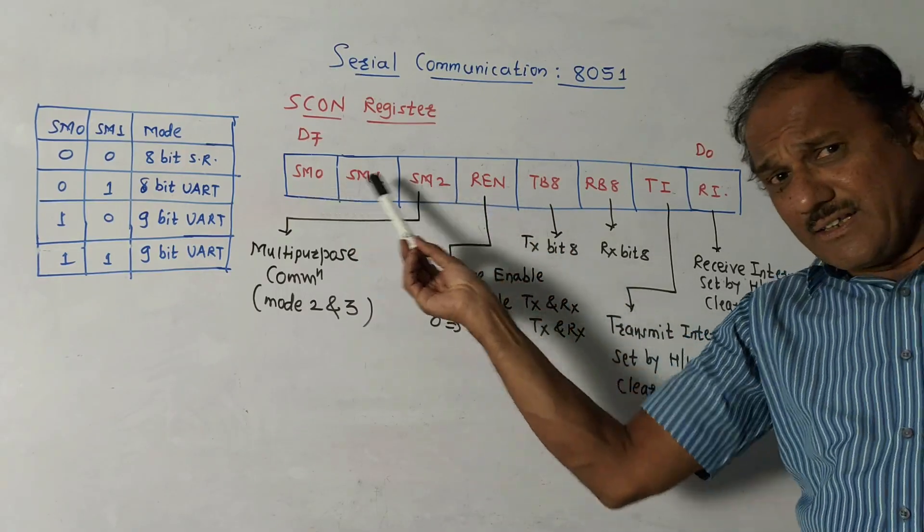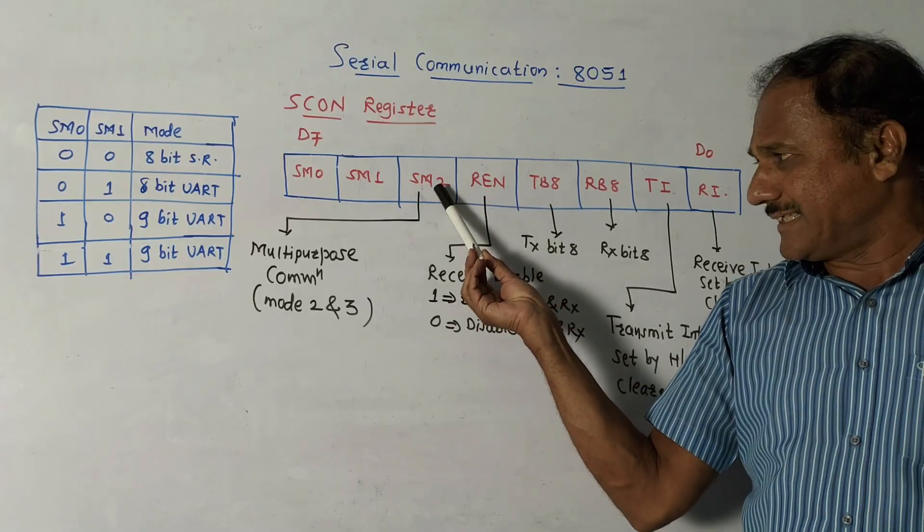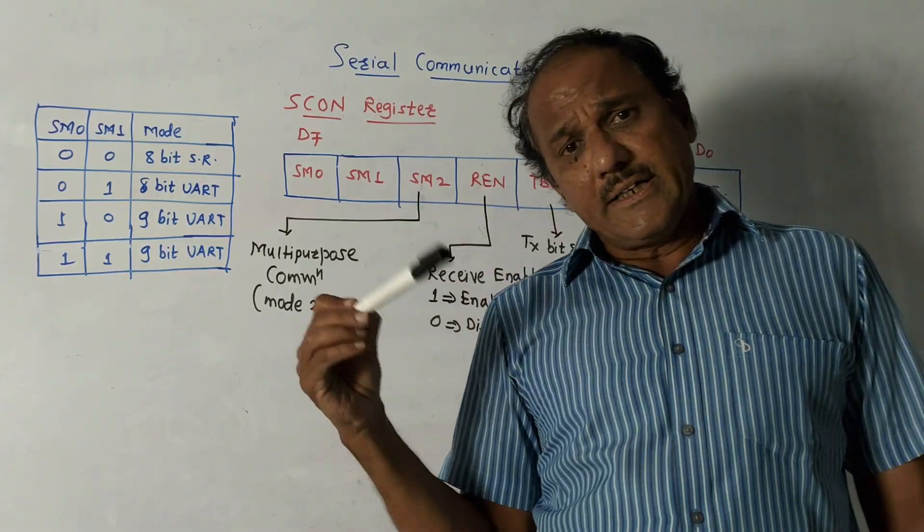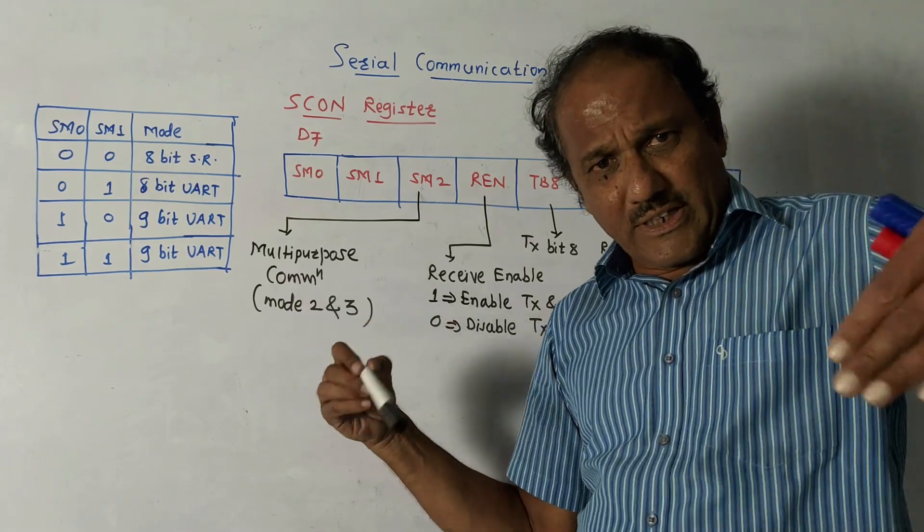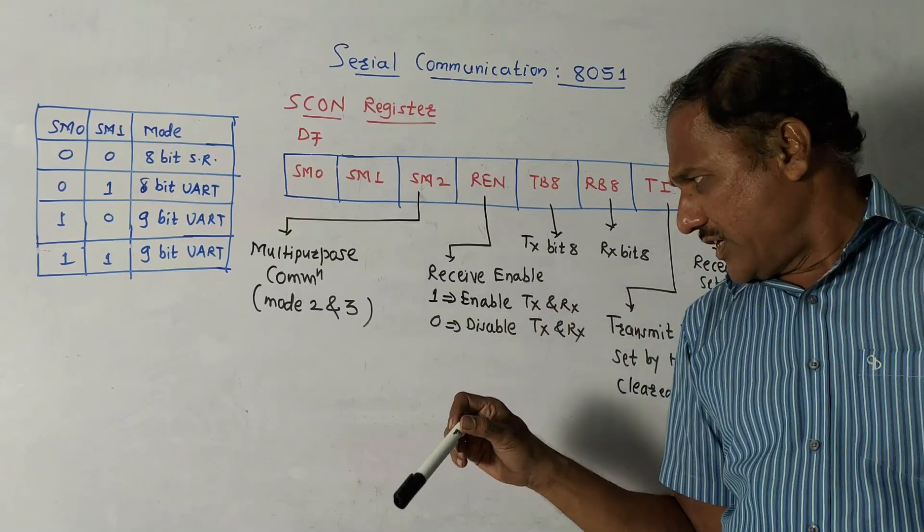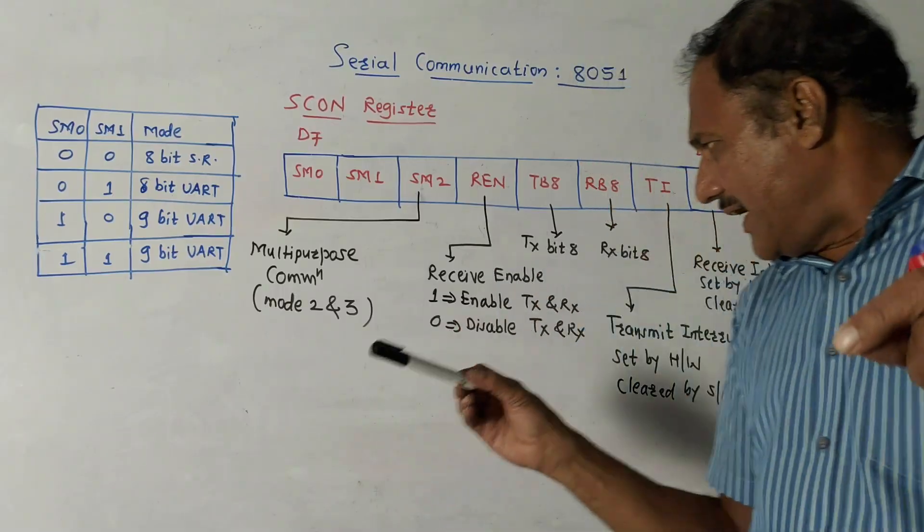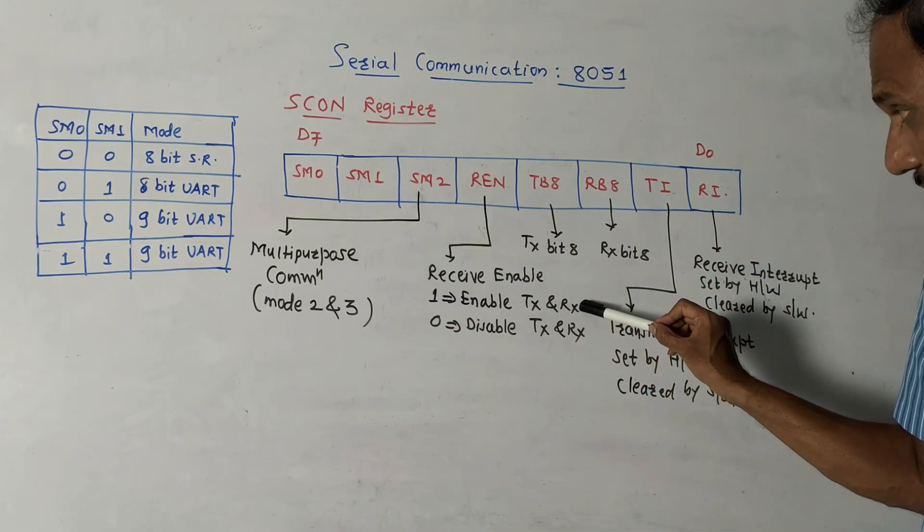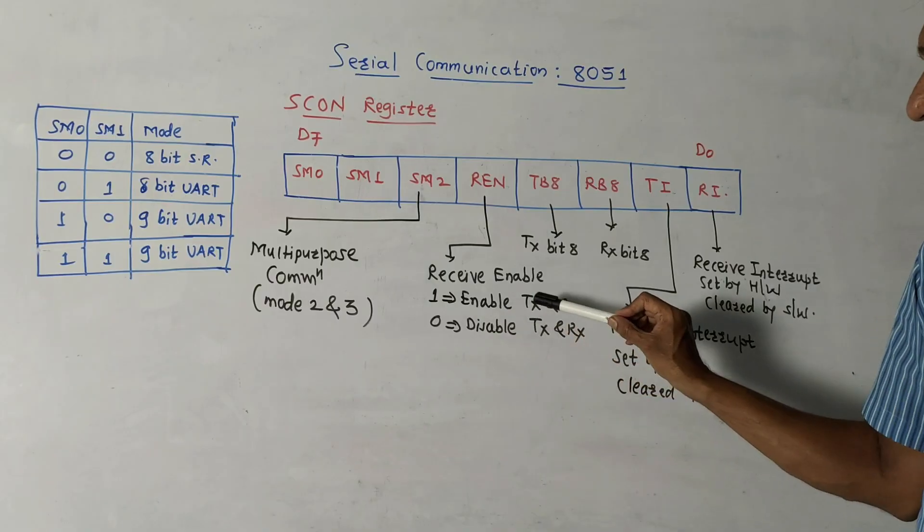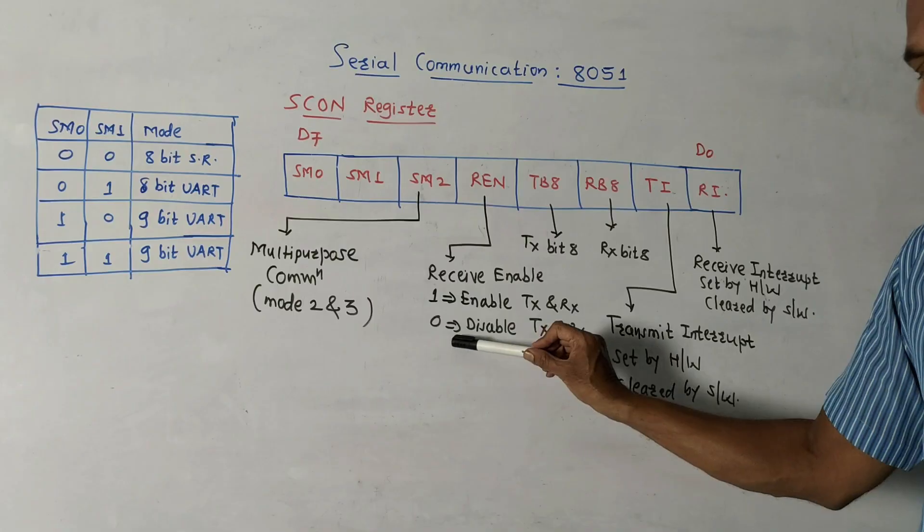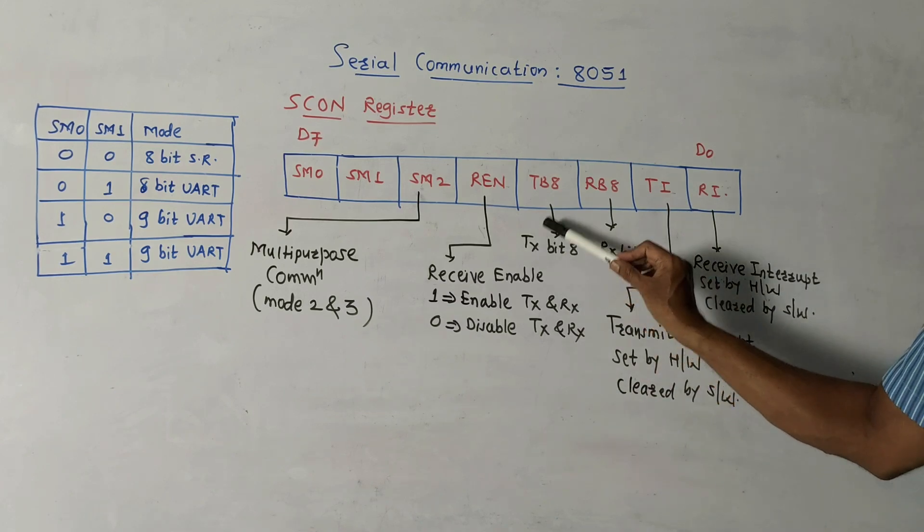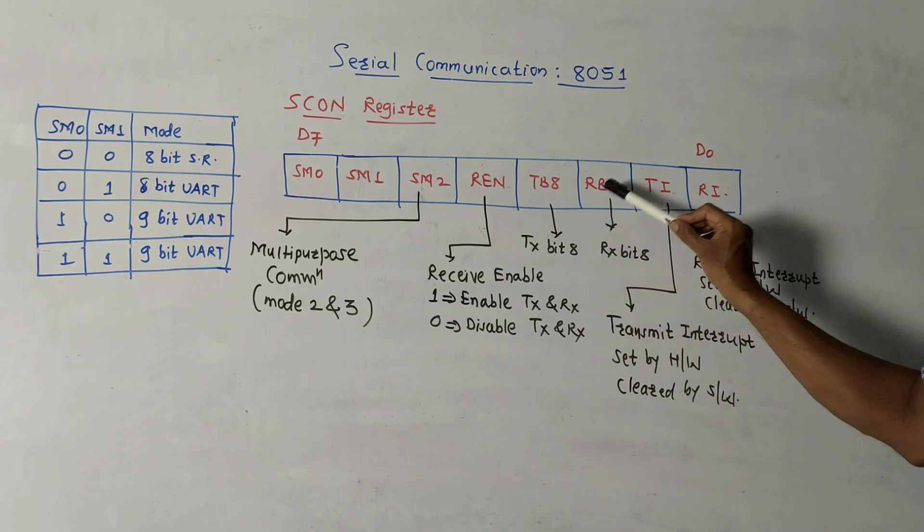Next bit is SM2. I'm reading the bit position from MSB to LSB. SM2 is used for multi-purpose communication, usually operated in mode 2 and mode 3. Then REN stands for receive enable. This is actually an indication. RX means receiver, TX means transmitter. If it is set to one, it indicates it is enabled for transmitter as well as receiver. If it is zero, it indicates that it is disabled for transmission and receiving operation. Then TB8, these are transmitter 8 bits. RB8 is receiver 8 bits.